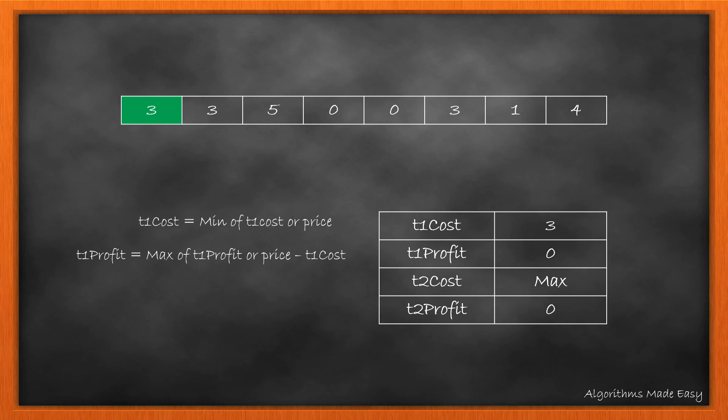Now T2 cost is the cost of second transaction. It is the minimal cost of buying the stock in the transaction 2 while taking into account the profit gained from the previous transaction. We update it to zero. Lastly we update the T2 profit which is nothing but the max of the T2 profit and the profit made by selling the shares bought at cost of T2. It will hold the final result.